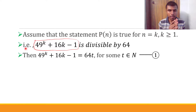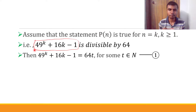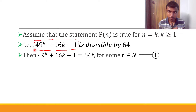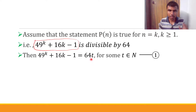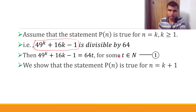Since this is divisible by 64, this expression must always give something like 64 times some number. For example, 32 is divisible by 2 because it can be written as 2×16. Similarly, since 49^k + 16k - 1 is divisible by 64, we write it as 64t. Mark this as equation (1) — we are going to use it later.